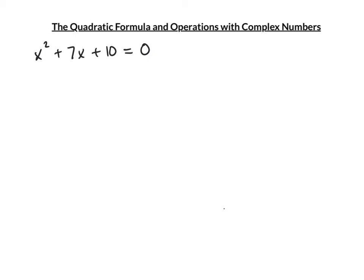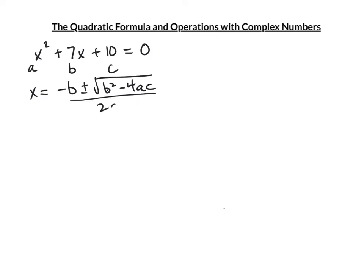First example: x² + 7x + 10 = 0. a is in front of x², b is in front of x, and c is the last number. The formula is x = (-b ± √(b² - 4ac)) / (2a).